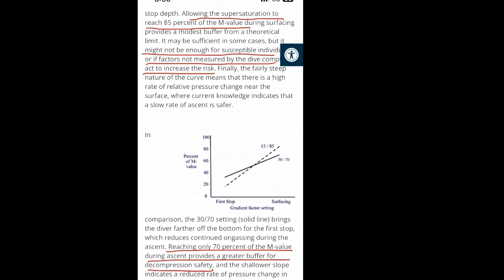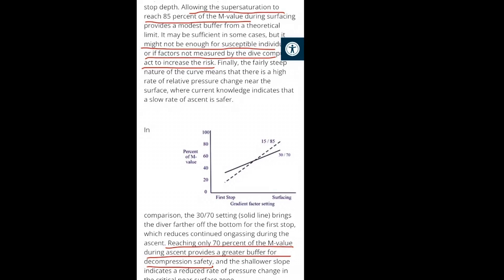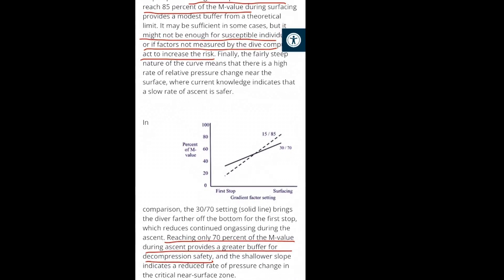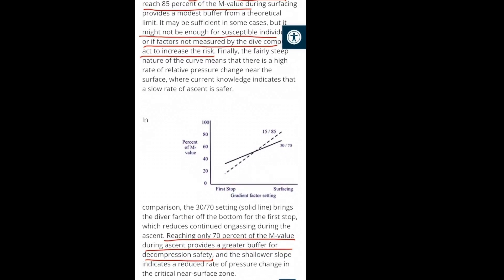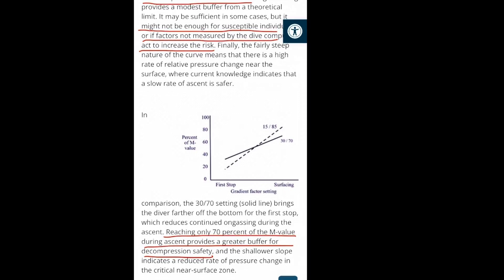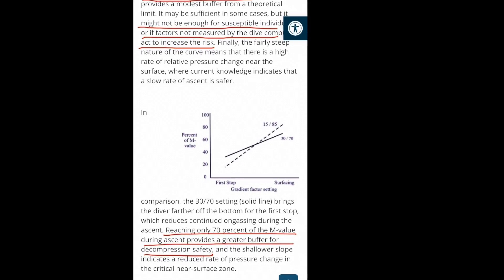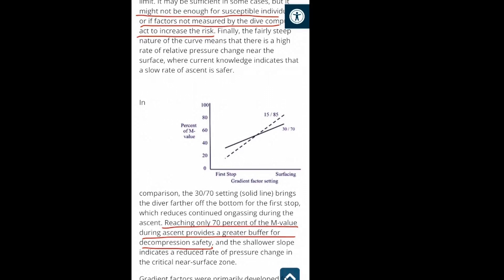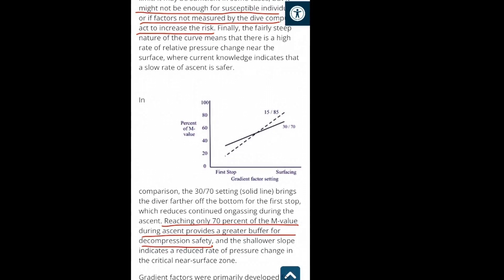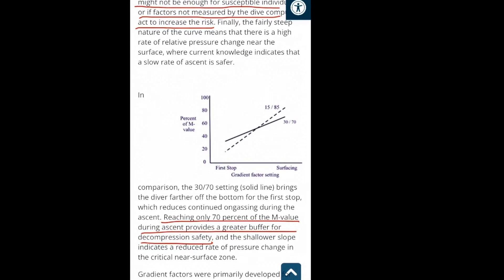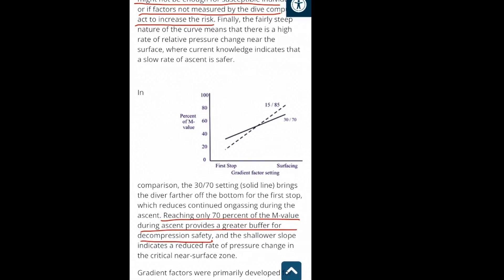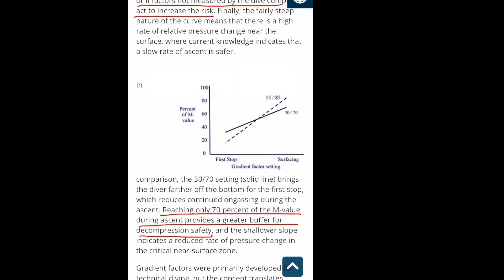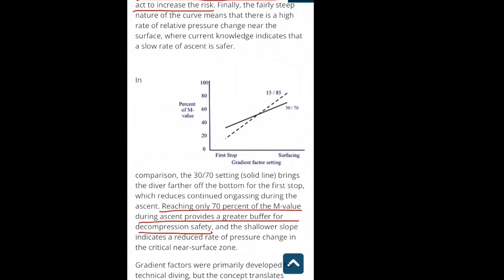Which gradient factors should we choose? According to Dr. Neil Pollack, allowing the supersaturation to reach 85% of the M value — the maximum tissue saturation — during surfacing provides a buffer from a theoretical limit, but it might not be enough if some factors are not measured by the dive computer, such as multiple deep dives over multiple days.